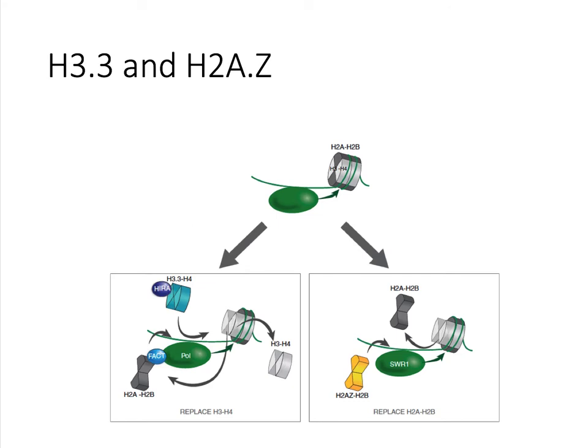H3.3 and H2AZ replace H3 and H2A if a histone dimer is dislodged during the passage of the RNA polymerase during transcription. This is diagrammed above, with the RNA polymerase shown in green. Sometimes the polymerase partially dislodges the nucleosome, and thus either an H3-H4 dimer or an H2A-H2B dimer has to be replaced. The HIRA chaperone assists in replacing H3-H4 dimers with H3.3-H4 dimers, while SWR1 is the chaperone replacing H2A-H2B dimers with H2AZ-H2B dimers. Because H3.3 and H2AZ are replacing histones dislodged by polymerases, they are found most often in regions of high transcription.